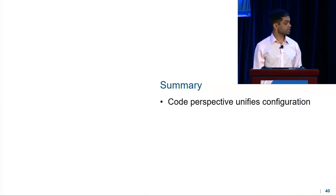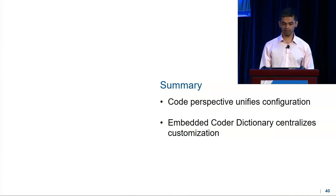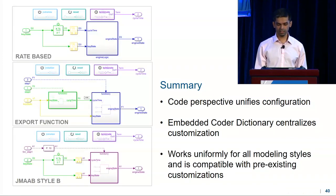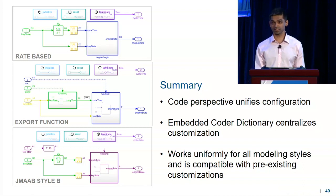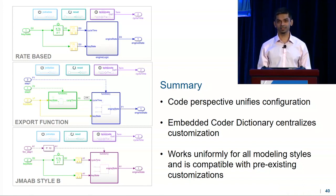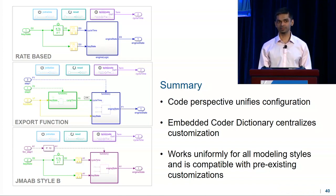To summarize, the code perspective unifies configuration and helps you be more efficient at customizing your model. We've also shown how authoring code customizations is simplified and centralized using the coder dictionary. We've put in a lot of effort into ensuring that these customizations work uniformly regardless of your modeling style. All of your existing customizations will continue to work as is — we're not changing anything, and they will continue to be supported moving forward. It's really our goal to provide you with all the customizations you need so that you don't have to resort to post-processing the generated code. We have a long list of things we're working on — come talk to me after the break and help me prioritize.